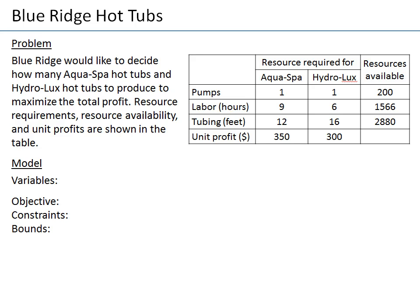Consider the following problem. Blue Ridge is a manufacturer of hot tubs and at the moment they are planning production of two products, Aquaspas and Hydroluxus, and they would like to decide how many units of those products to produce to maximize the total profit.